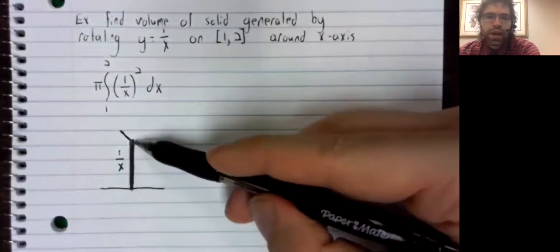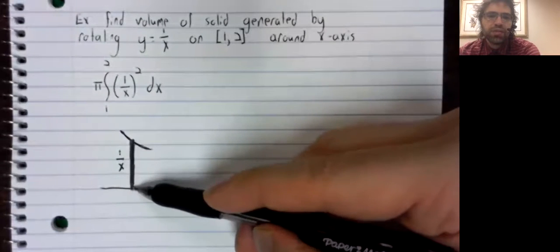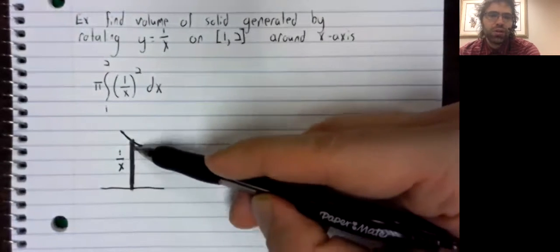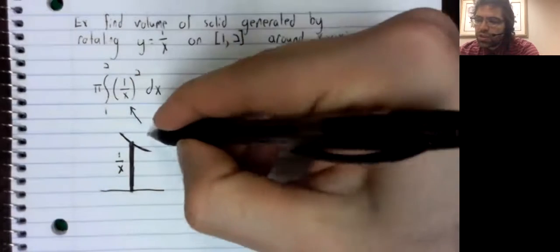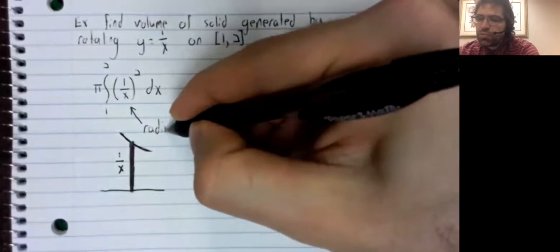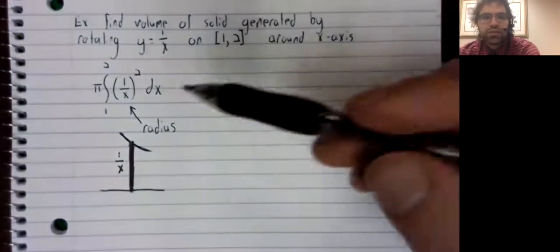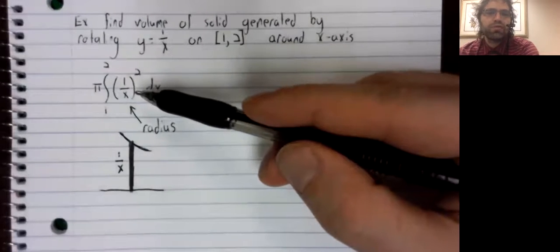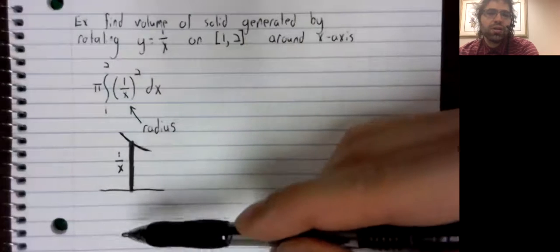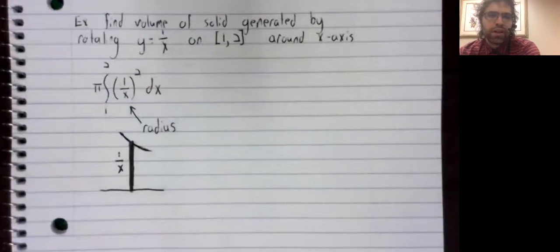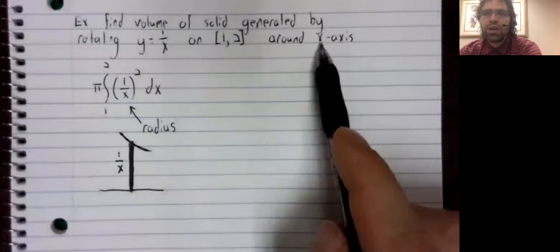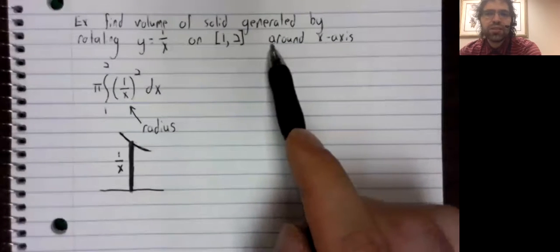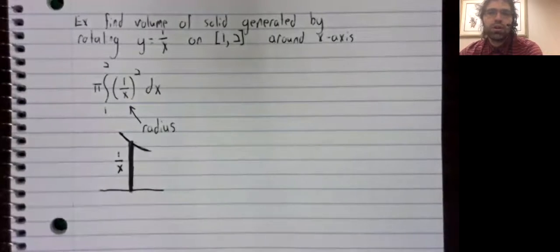This 1 divided by x gives us the radius of one of these cylinders. And that's all I want to say before we compute the integral. That this 1 divided by x comes from the radius of a cylinder. And if we keep that in our mind, then when we modify these problems, for example, when we rotate around something other than the x axis, we'll be able to do so without a lot of grief.